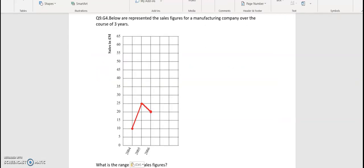Below we have the sales figures for a manufacturing company over the course of 3 years. What is the range of sales figures? So we're looking at the range. What is the highest and what is the lowest? The lowest value is here, so 10 million. And this is the highest, 25. So 25 take away 10 is going to be 15 million.